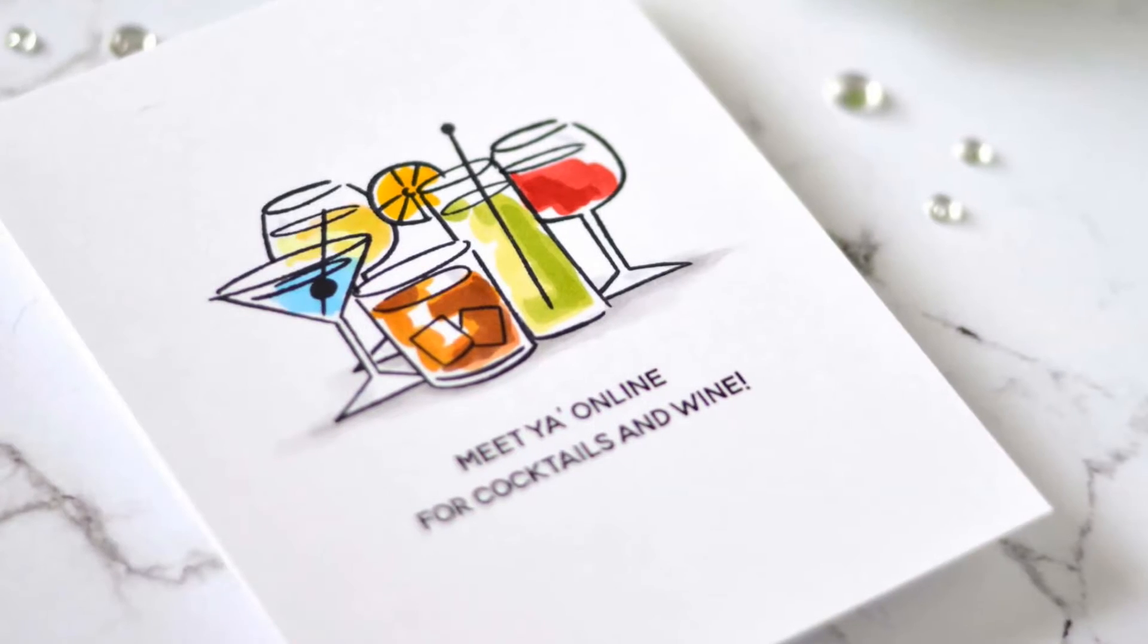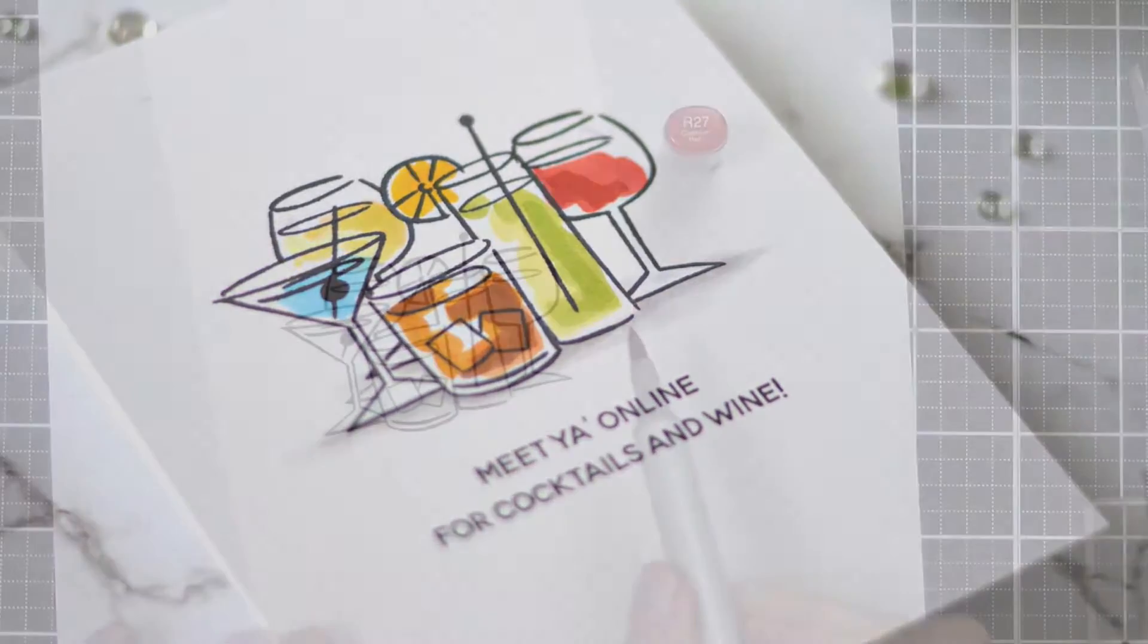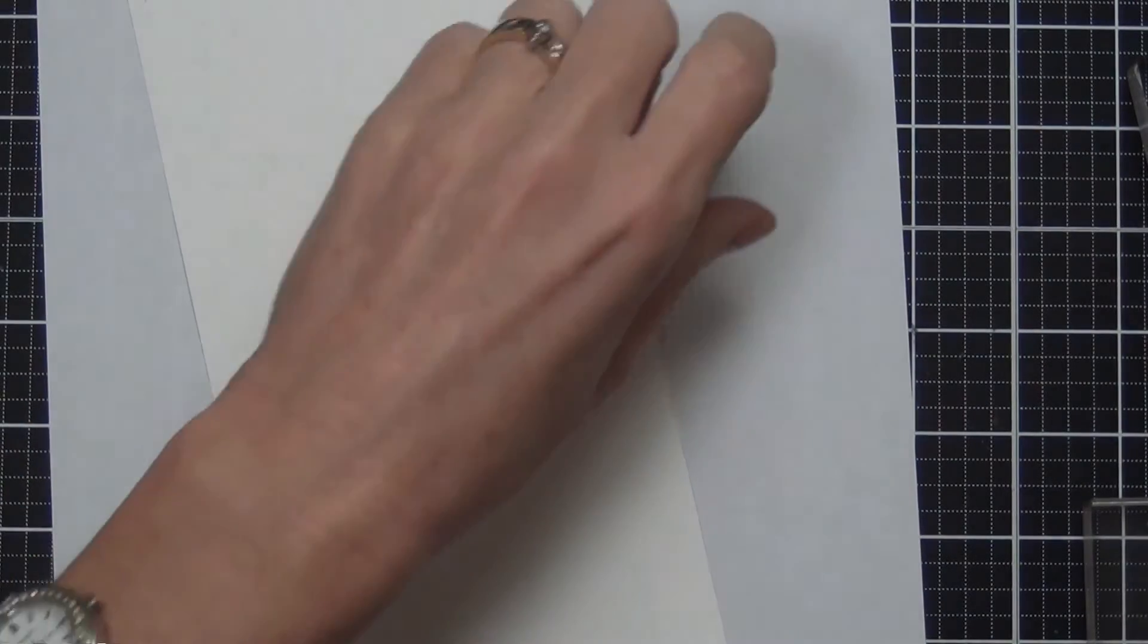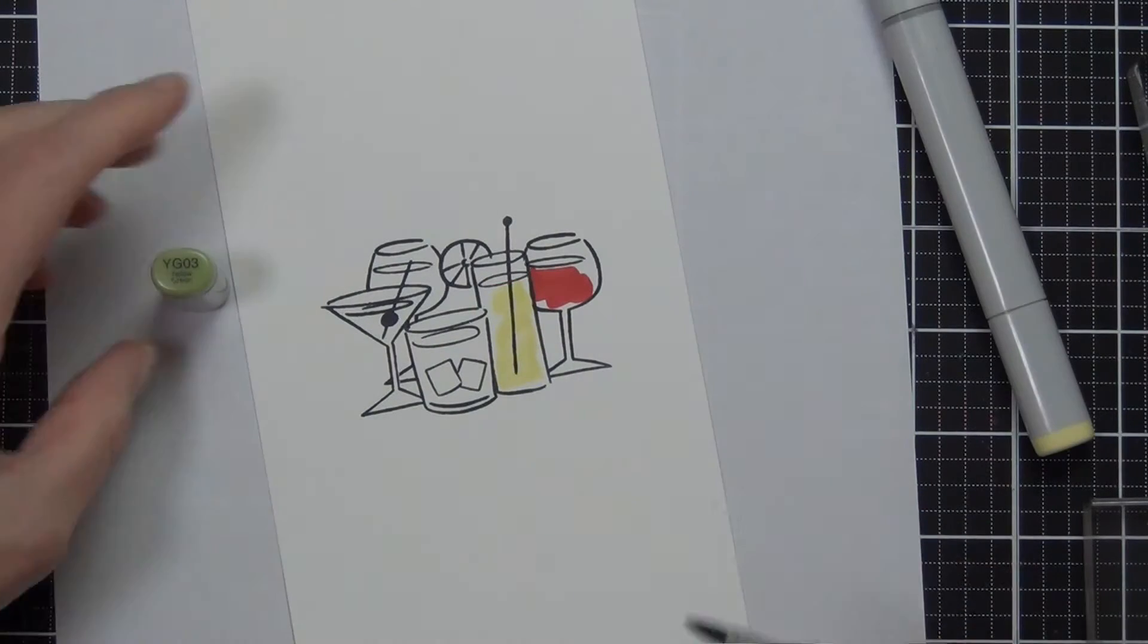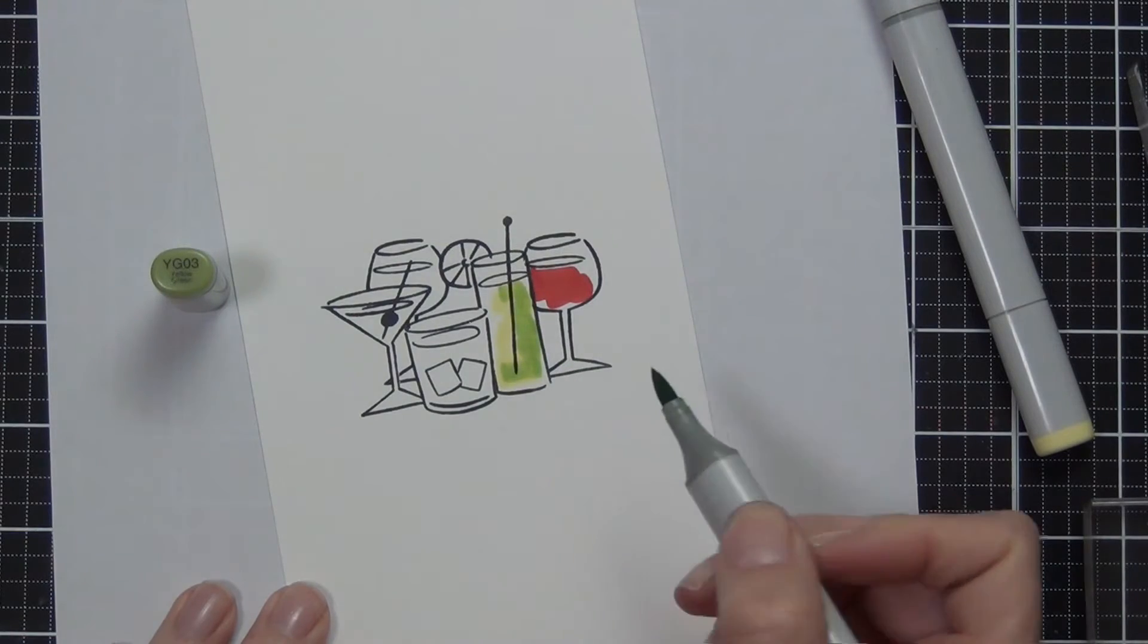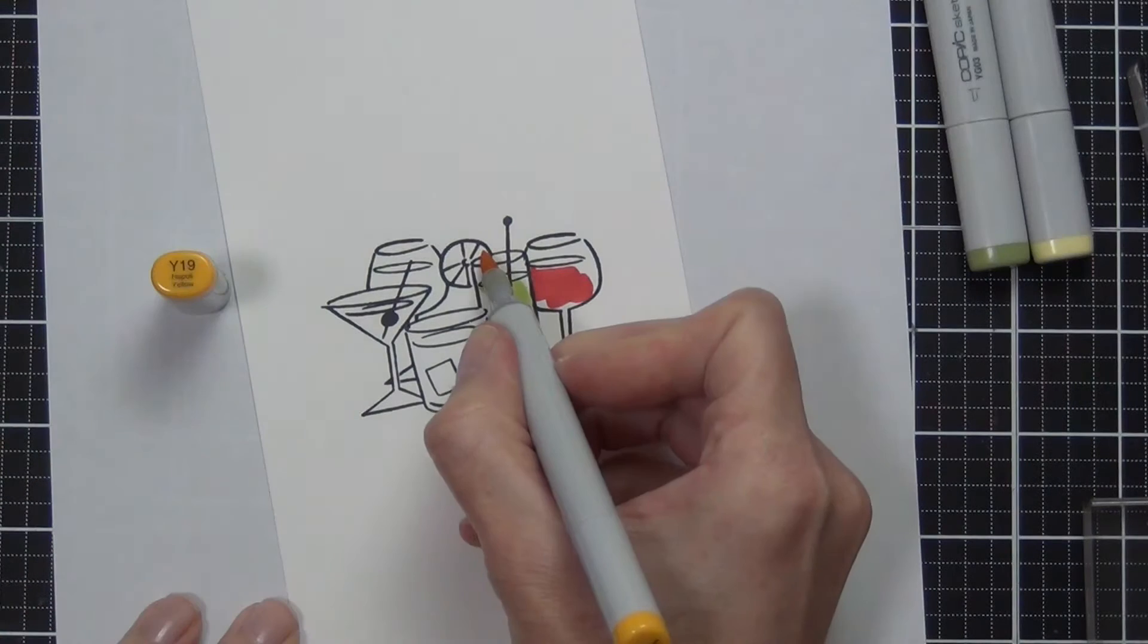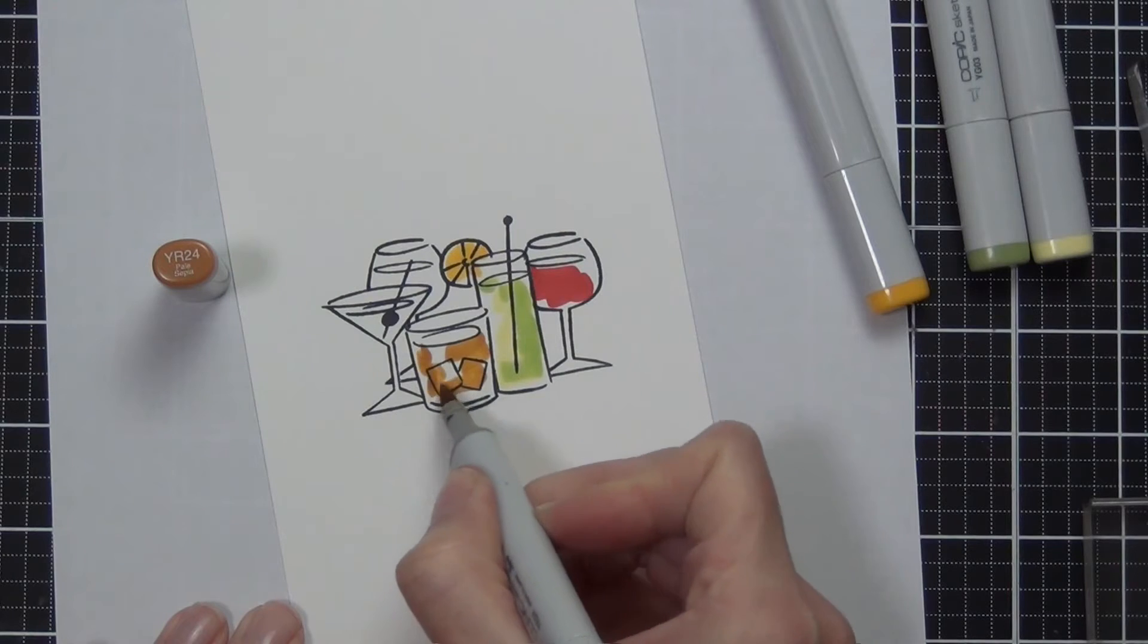Now for some really simple what I like to call messy Copic coloring - literally making it look like it's meant to be messy but not too messy. I'm just doing a wash of color on each of the glasses.